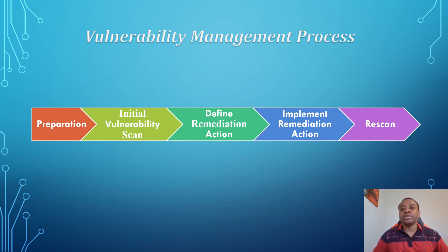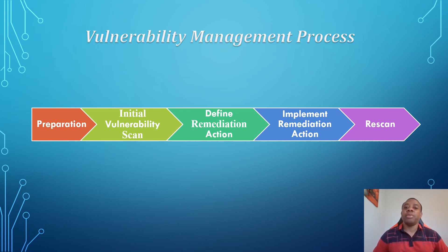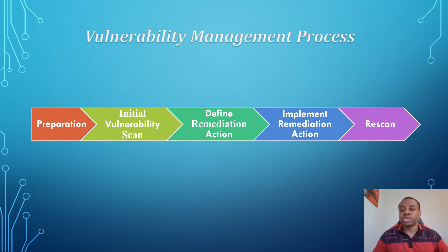In this case, there must be a document to support that. That document is called the Risk Acceptance Memo or Waiver Memo. The Risk Acceptance Memo is developed by the system owner and presented to the authorizing official. The authorizing official reviews and signs off on the Risk Acceptance Memo, which supports the compensating controls already implemented to mitigate the vulnerability.